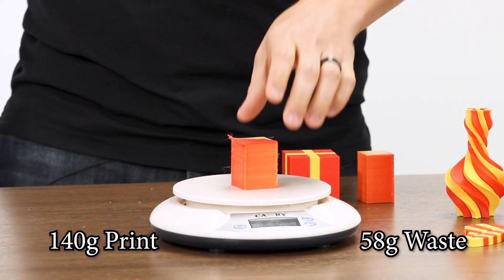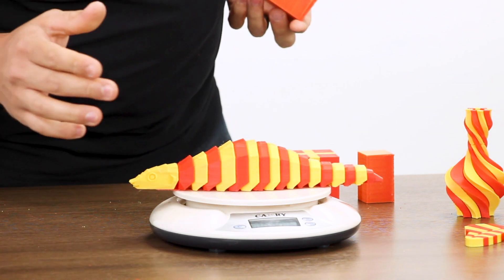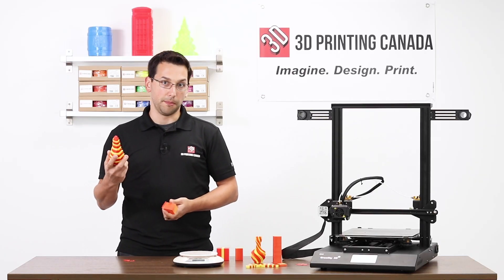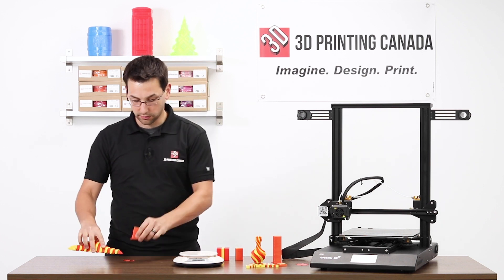It's 58 grams. So we're looking at almost three times the amount of material in the object versus the purge.